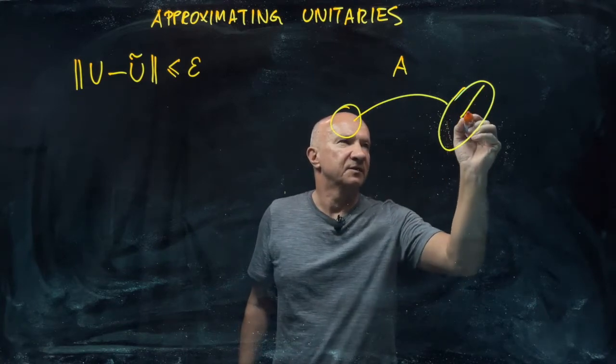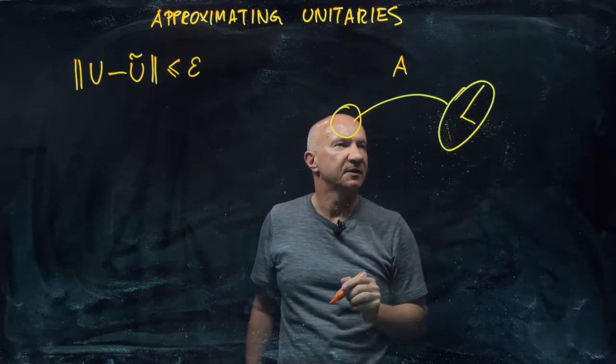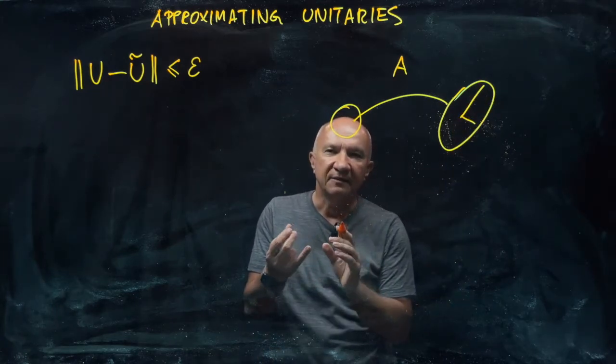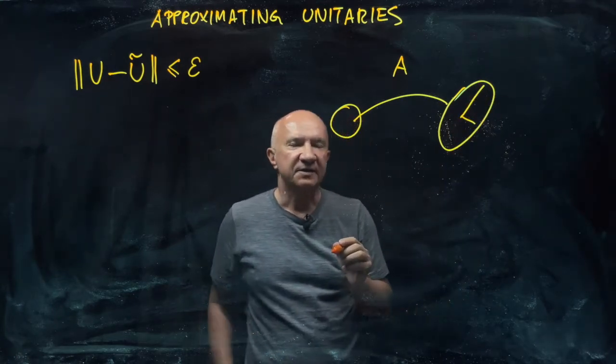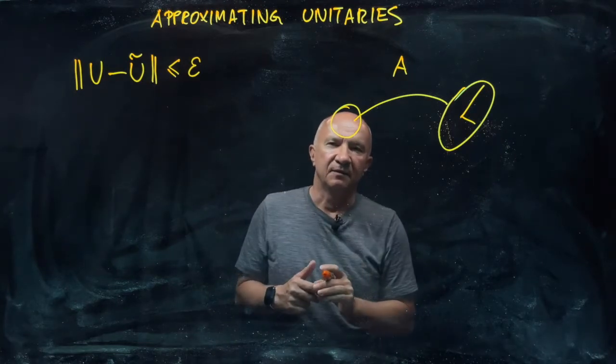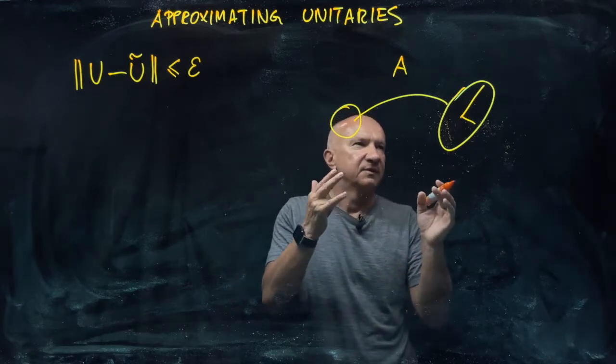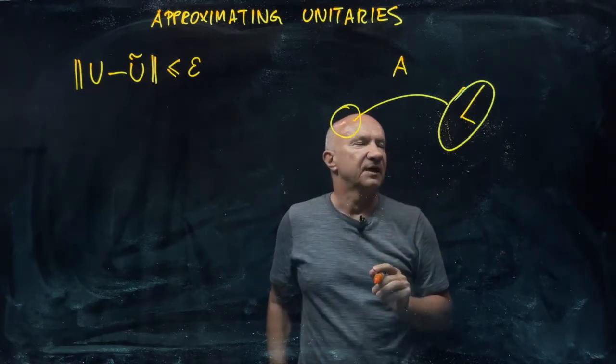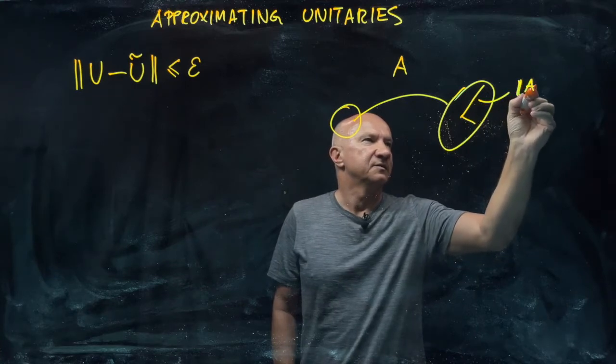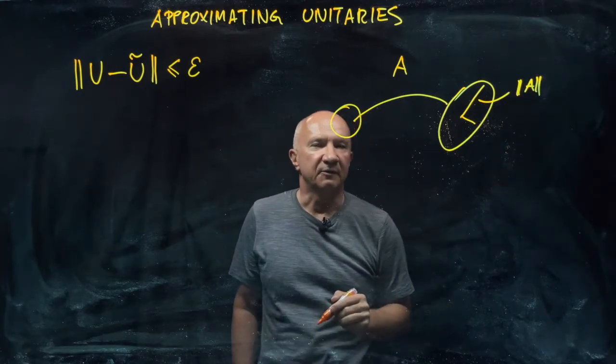So in this case, if you look at the principal axis of this ellipsoid, then those vectors will correspond to eigenvectors. And the largest eigenvalue, or more precisely the largest absolute value, you look at the absolute values of eigenvalues, and the largest one will correspond to this norm of a.